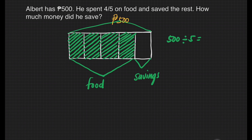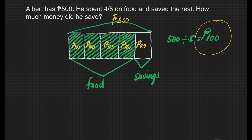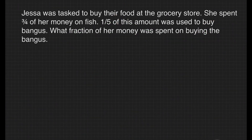So we'll have 100 pesos in each box. The rest will also be 100 pesos. The question is how much did Albert save? He saved 100 pesos. And that's it.